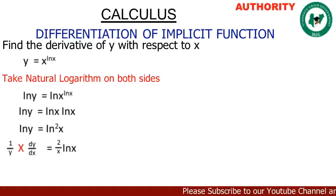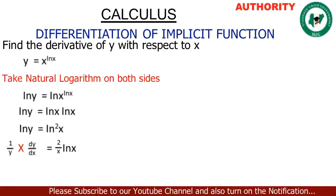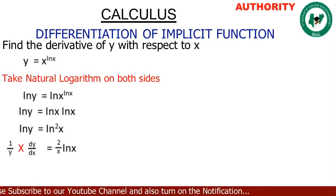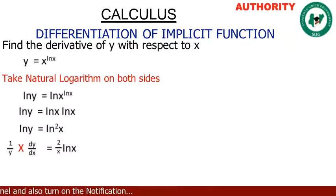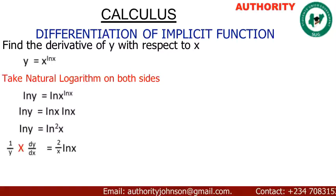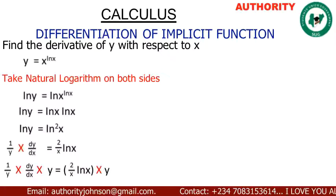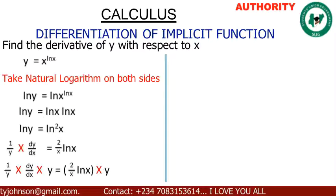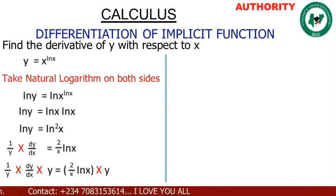So we have (1/y)(dy/dx) = 2/(x · ln x). To make dy/dx the subject, we multiply both sides by y — the inverse of 1/y — giving us dy/dx = y · [2/(x · ln x)].